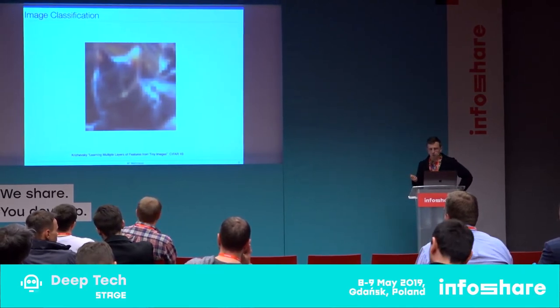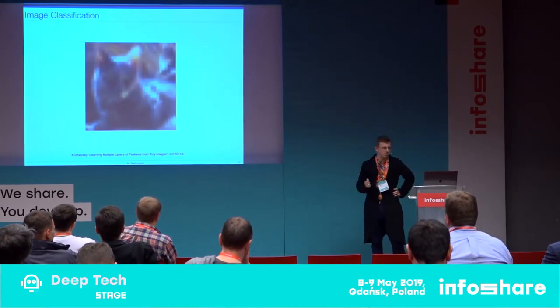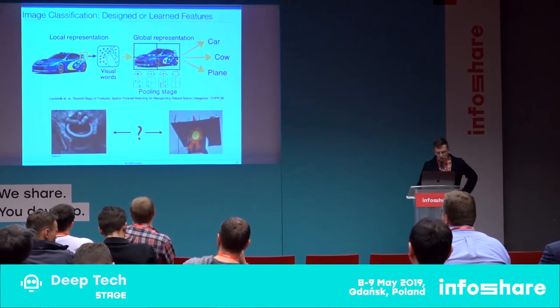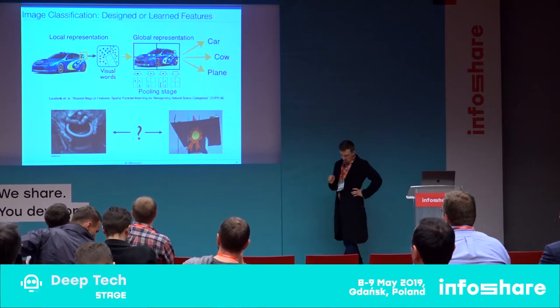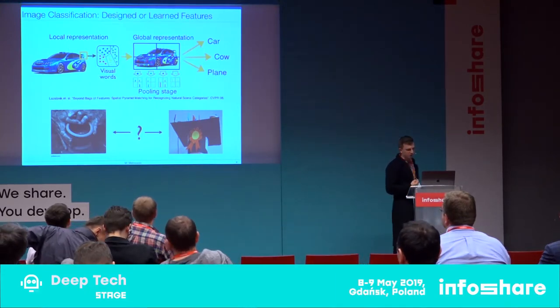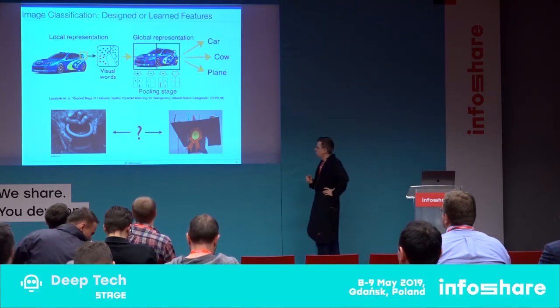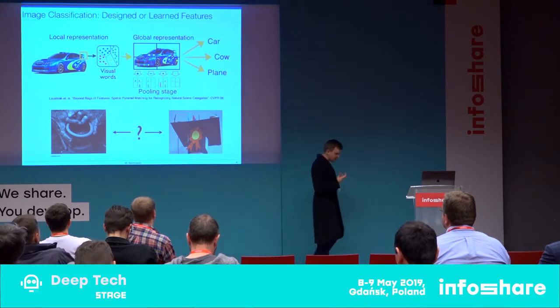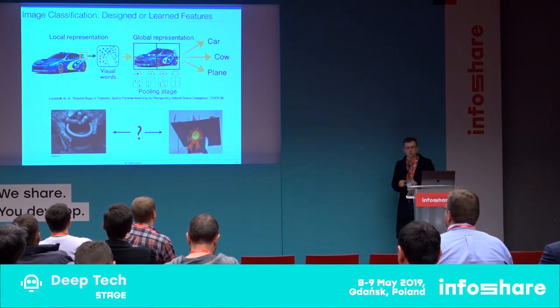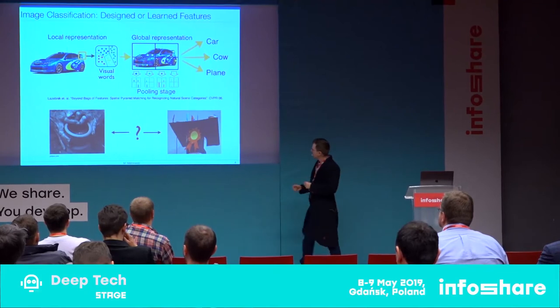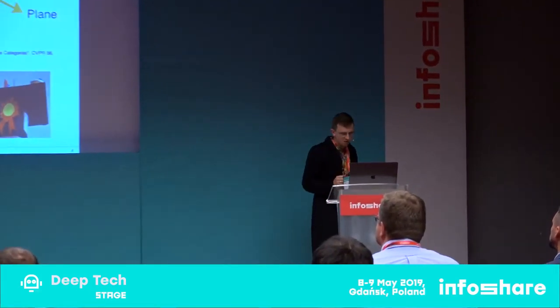Around that time, there was a big philosophical discussion about building recognition architectures. On one side, there was a philosophy arguing for handcrafted architectures — each component of the visual system should be handcrafted. On the other hand, there were people arguing for learning-based approaches: instead of designing particular components, perhaps we should design a learning algorithm and let the architecture learn the weights from data.